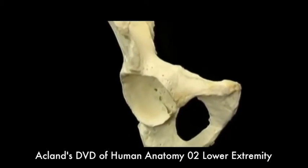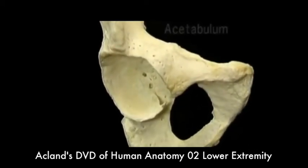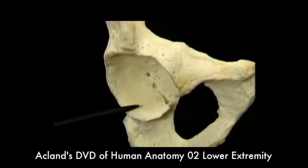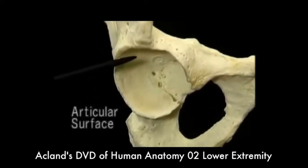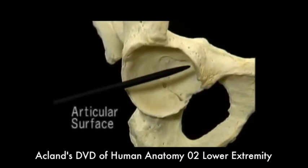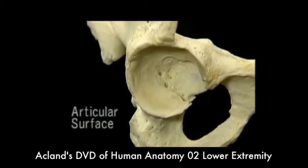The socket for the hip joint is called the acetabulum. This broad, smooth area is the articular surface. We'll see it again in a minute, with the articular cartilage intact.